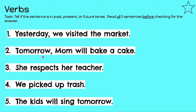Number two: Tomorrow, mom will bake a cake. What is the action word for this sentence? The action is the word bake — and bake and cake are rhyming words! Does bake have -ed? Is it in the past? No. Does it have the word will in front of it? Yes. And I also notice it says tomorrow, which has not happened yet — that is in the future. So this is a future tense sentence.